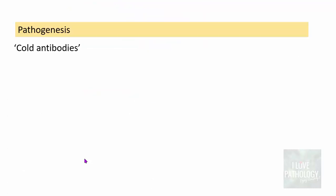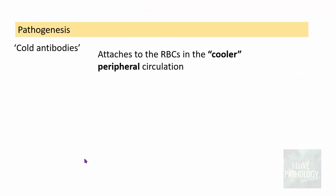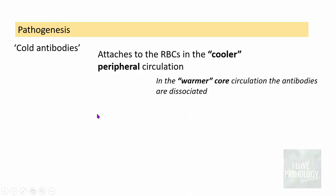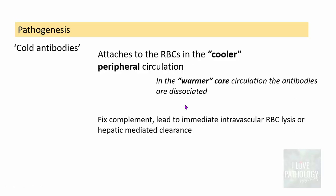The pathogenesis: cold antibodies attach to RBCs in the cooler peripheral circulation. The peripheral circulation is always cooler compared to the warmer core. In the warmer core, the antibodies dissociate; they attach only in the cooler periphery. Once attached, they fix complement, leading to immediate intravascular RBC lysis or hepatic-mediated clearance — via the direct or indirect mechanisms discussed earlier.